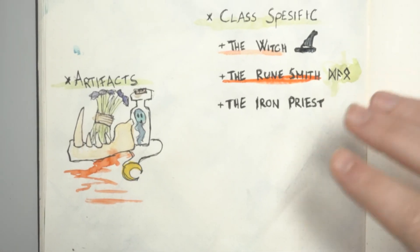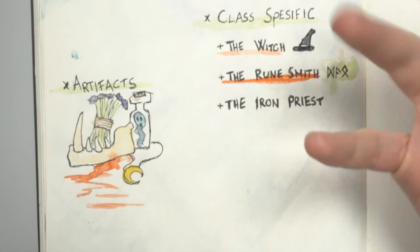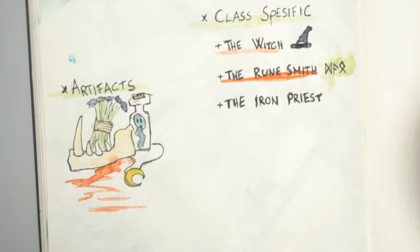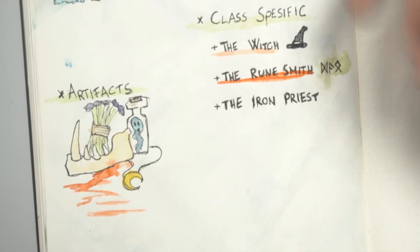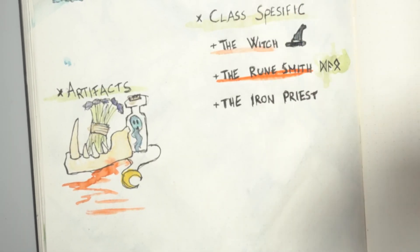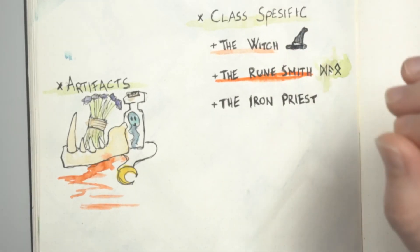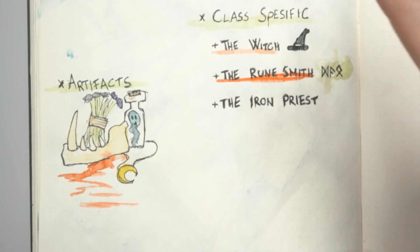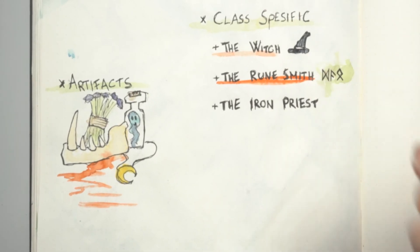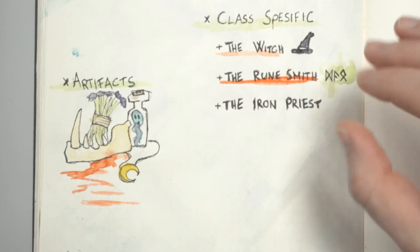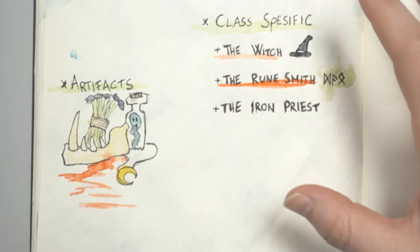In a lot of folklore, iron and steel are often used to repel monsters. Iron priests are the monster exterminators focused on using iron to repel and kill monsters.